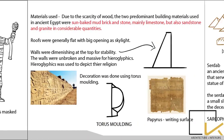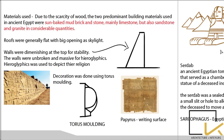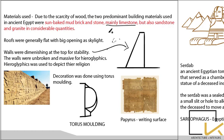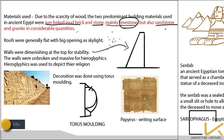For Egyptian architecture, the main material used was limestone. Due to the scarcity of wood, predominant materials were usually sun-dried mud bricks; stone was also used, but limestone was the main one. They also used sandstone and granite in considerable quantities.